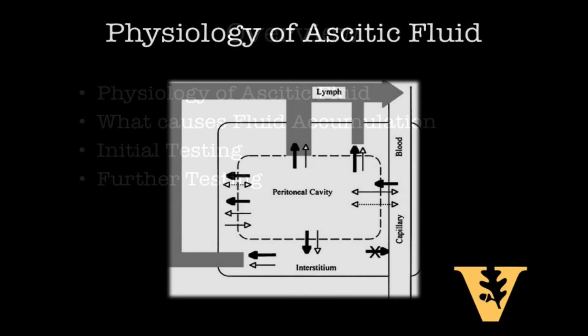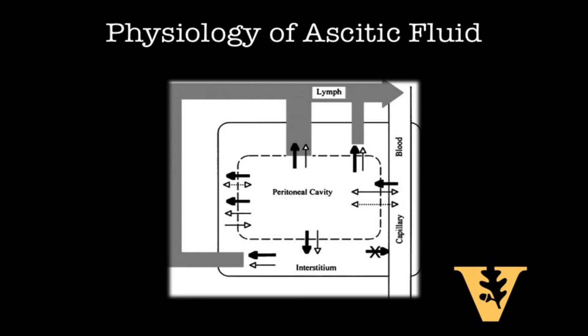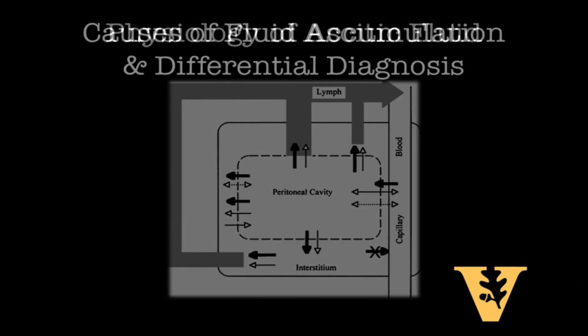From peritoneal dialysis studies, we have come to understand a little bit more about our body's normal mechanism for clearing the peritoneal space. Most of the fluid is cleared via the subdiaphragmatic stoma. Mechanically, it's our respirations that help force fluid into this stoma. When you exhale and your diaphragm relaxes, a small amount of fluid fills the area between the liver and the diaphragm, and this area is collapsed by the act of inspiration, forcing fluid into the stoma.